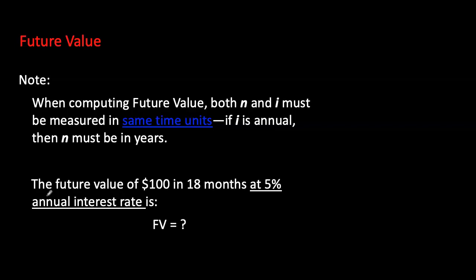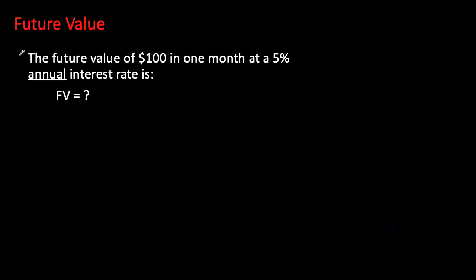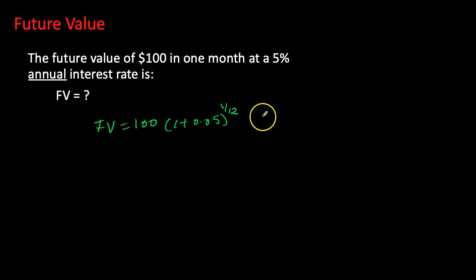We can also invest $100 for just one month at a 5% annual interest rate. Keeping n in years, one month equals 1/12 of a year. This formula also gives us a way to convert any annual interest rate into a monthly rate: the monthly rate equals (1 + annual rate)^(1/12) minus 1.